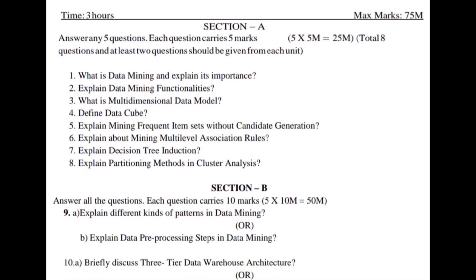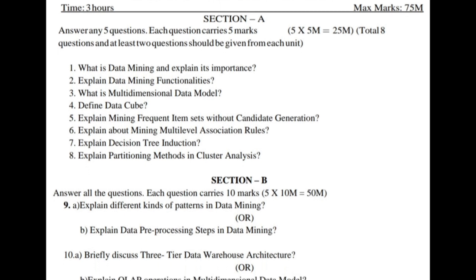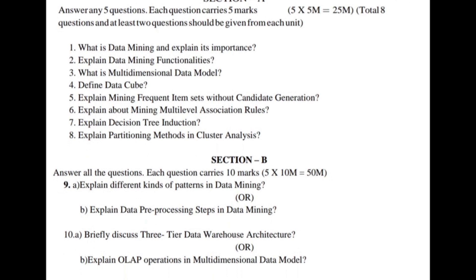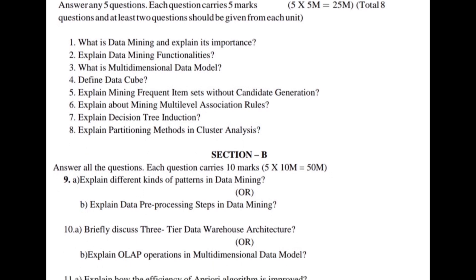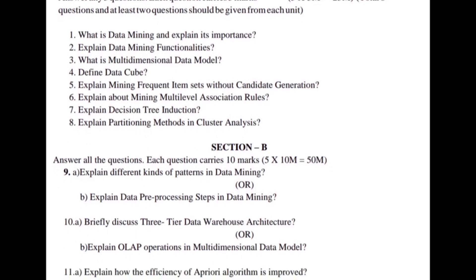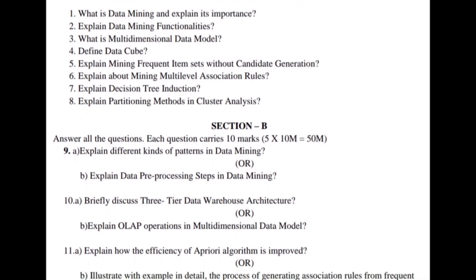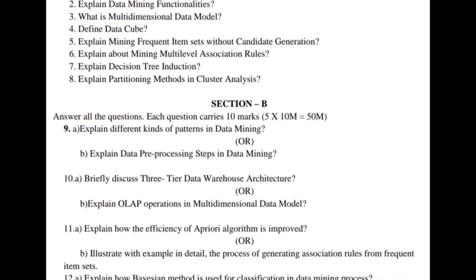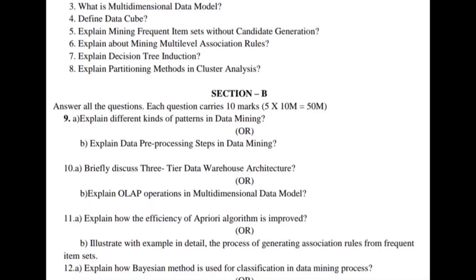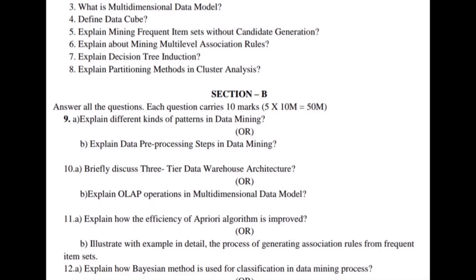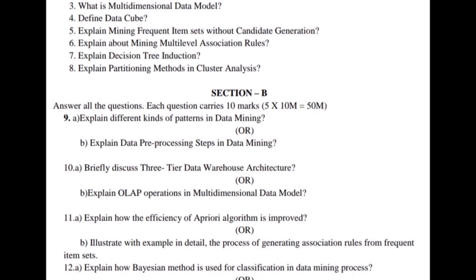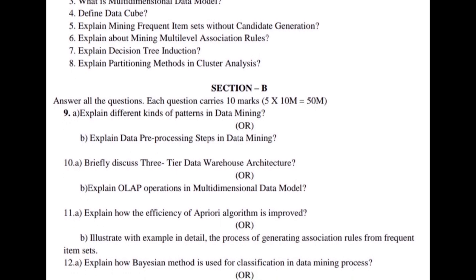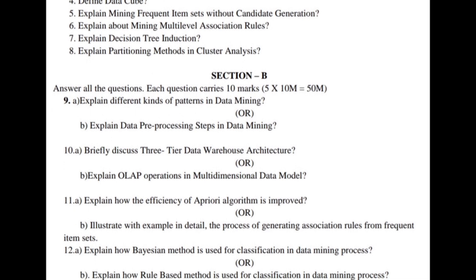Tenth a: Briefly discuss three-tier data warehouse architecture. Tenth b: Explain OLAP operations in multi-dimensional data models. Eleventh a: Explain how the efficiency of the Apriori algorithm is improved. Eleventh b: Illustrate with an example in detail the process of generating association rules from frequent item sets.